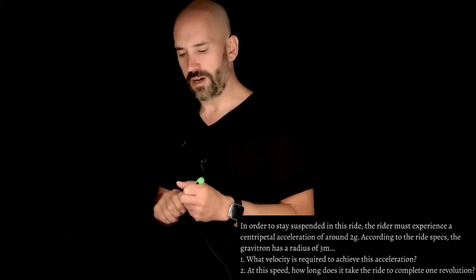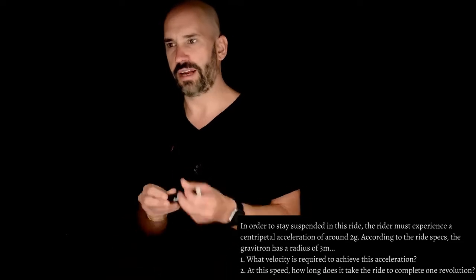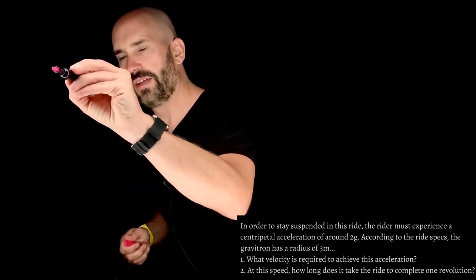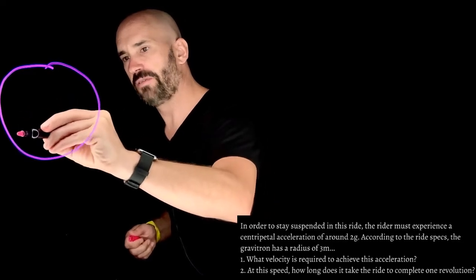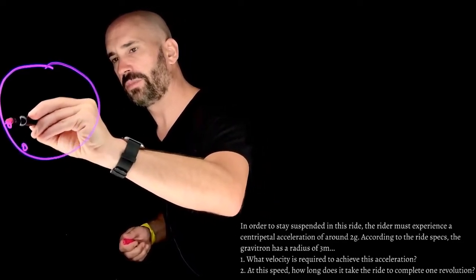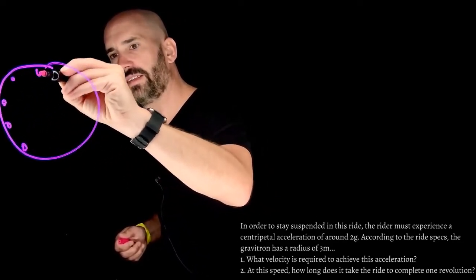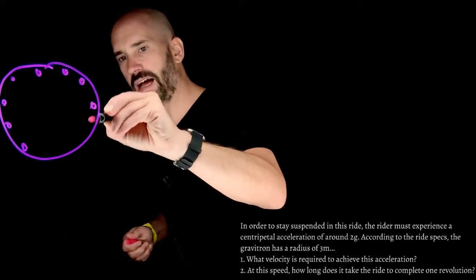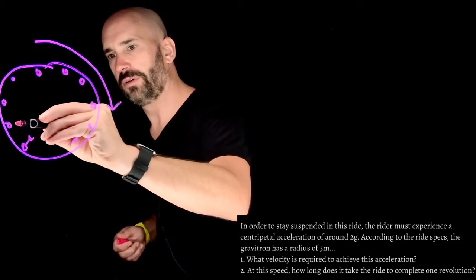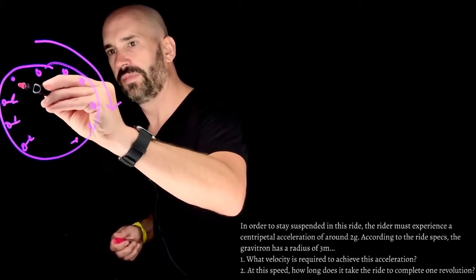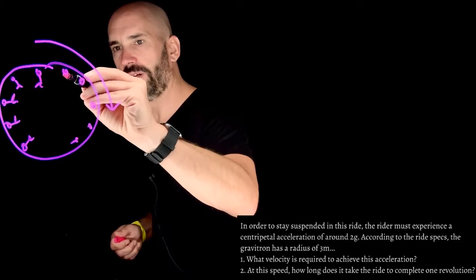Alright, so just, you know, for funsies, a free body diagram because you guys know how I feel about them. So here is the circular thing, and then everyone, these are all the heads of all the people. I'm looking down on it, and it's spinning around, let's say, in this direction, and so these are all like the little people, and they're all leaning against the wall.